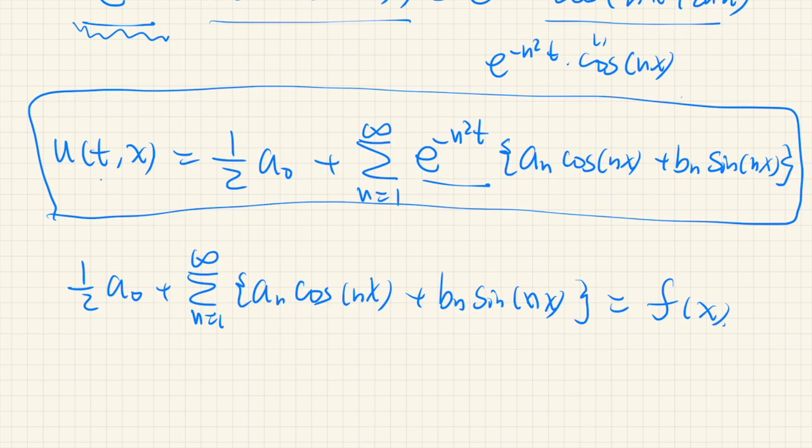So the coefficients a0, an, bn, they must be determined from this equation. This is the initial condition. So as you can see, this left hand side is nothing but the Fourier series. Alright, that's all for this video. See you later.